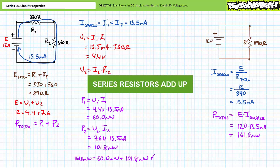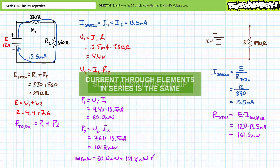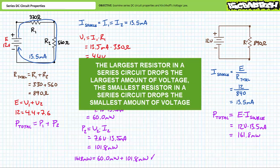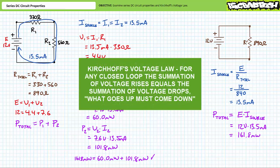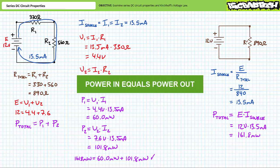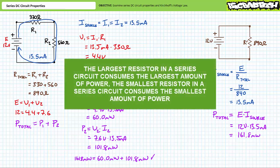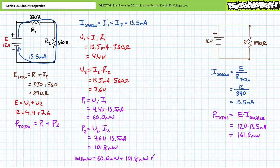Our complete list of series circuit properties: one, R total equals R1 plus R2; two, current through elements in series is the same — I source equals I1 equals I2; three, the largest resistor drops the largest voltage, smallest drops the smallest; four, for any closed loop, the summation of voltage rises equals the summation of voltage drops — what goes up must come down — E equals V1 plus V2; five, power in equals power out — P total equals P1 plus P2; and six, the largest resistor dissipates the largest amount of power, and the smallest resistor dissipates the smallest amount of power. These observations constitute fundamental properties for all series DC circuits and serve as both a great way of simplifying the analysis procedure and an excellent means of checking your work.